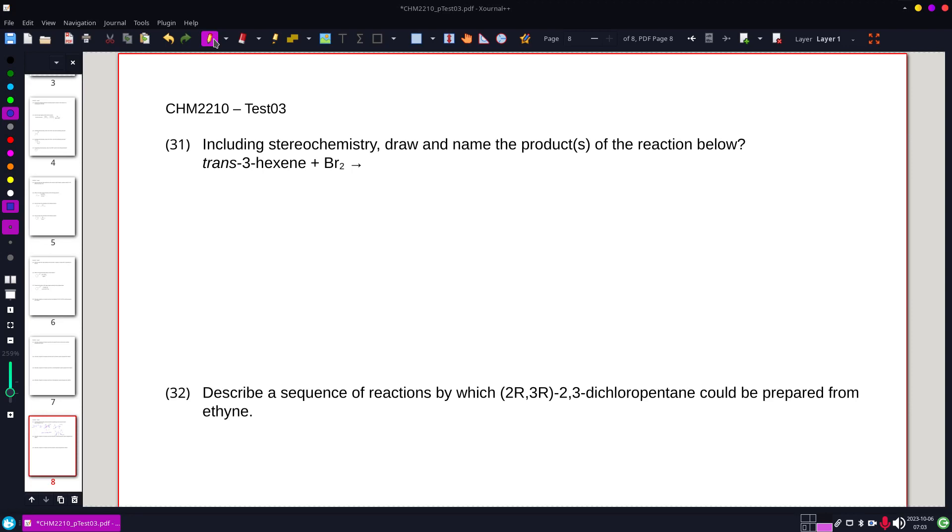Now, I did a similar problem to this, I think it's question number six, where it was cis-3-hexene. And in that case, I solved it using perspective drawings and Fischer. I'm doing the same thing here. This time, I'm gonna solve this one with Fischer diagrams.